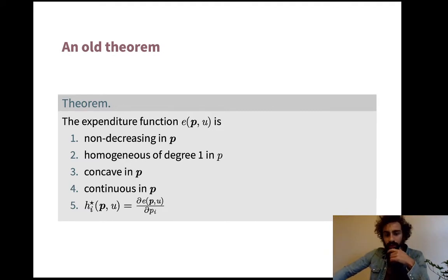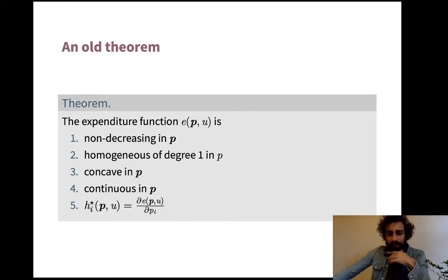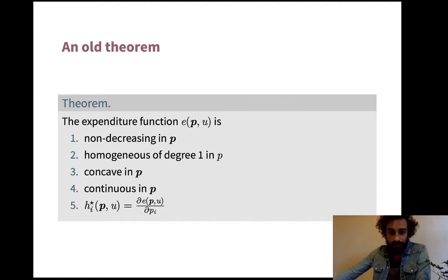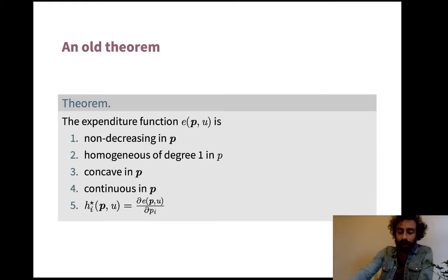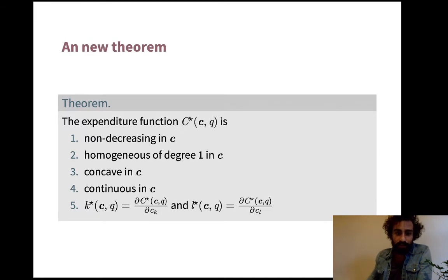Now I had this old theorem from weeks ago about the expenditure function: it was non-decreasing in p, homogeneous of degree one, concave, continuous — and Hicksian demand is the derivative of the expenditure function with respect to prices. This was a very informative theorem. We went over the comparative statics in detail: why non-decreasingness, why homogeneity, why concavity. From points three and five we derived the law of compensated demand. It was at the core of our expenditure minimization lectures.